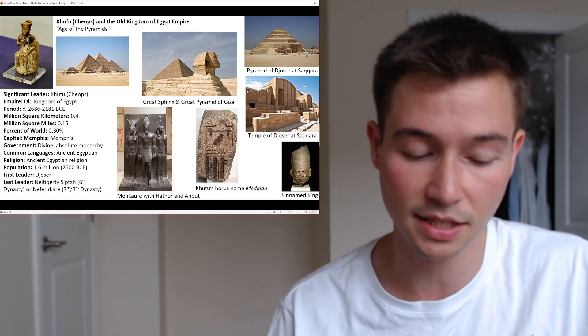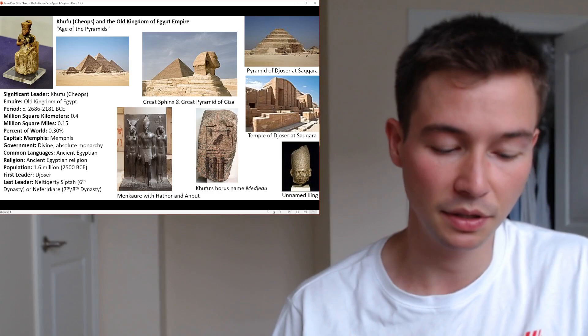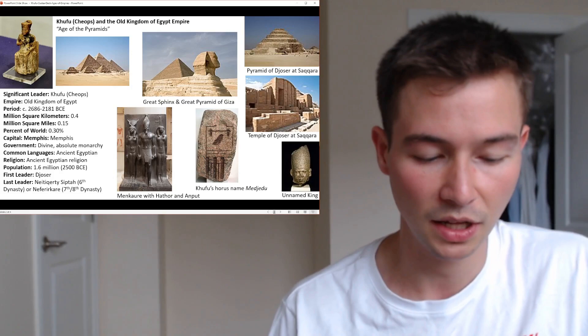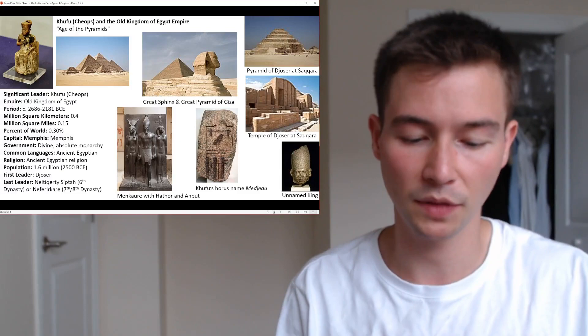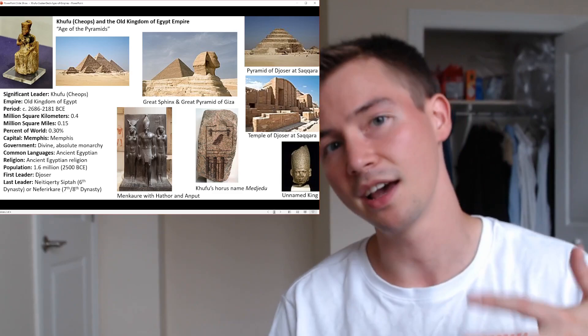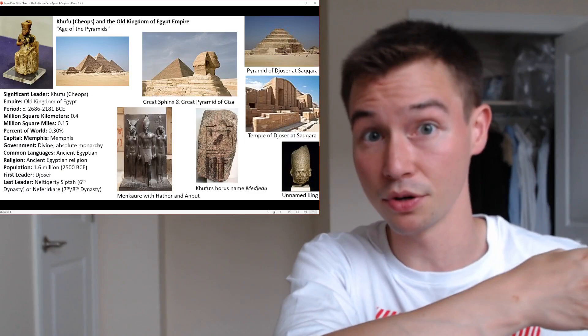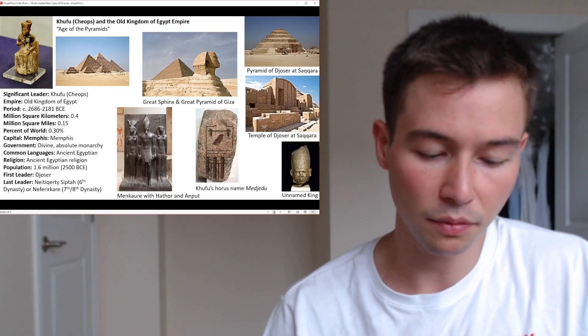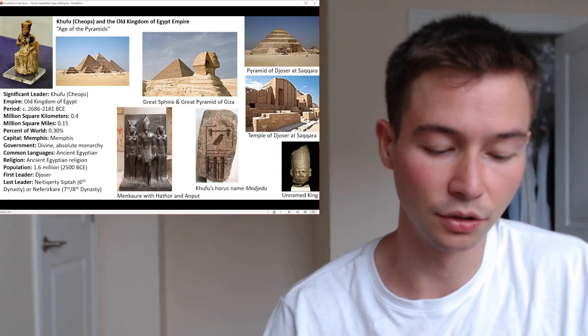Starting with the unification of Upper and Lower Egypt: the origins of the Old Kingdom trace back to the early dynastic period, circa 3,100 to 2,686 BCE — the period before the empire that led up to it. In the BCE dating system, bigger numbers are further from zero. This was a time of political consolidation and cultural development. Narmer, often identified as the first pharaoh, is credited with unifying Upper and Lower Egypt around 3,100 BCE, marking the dawn of the dynastic era.